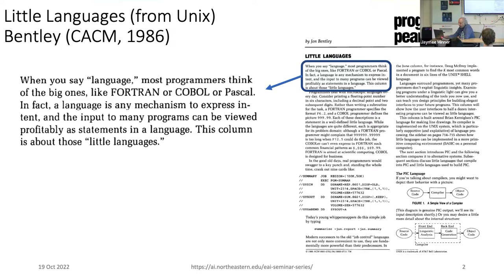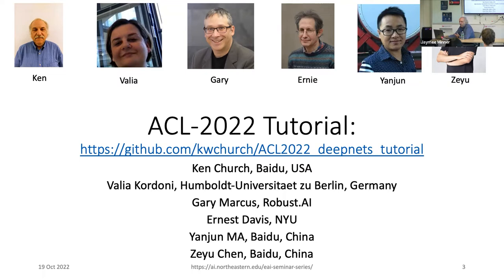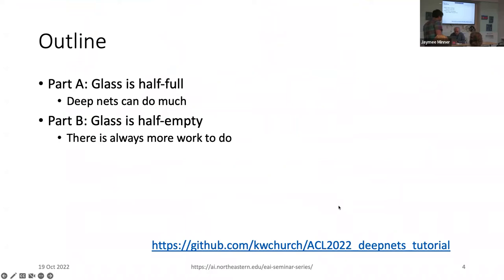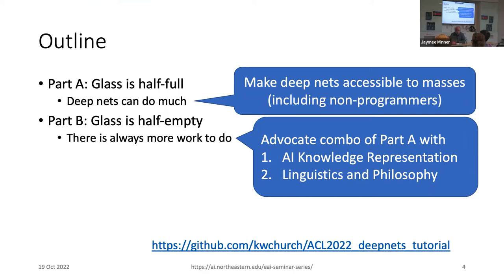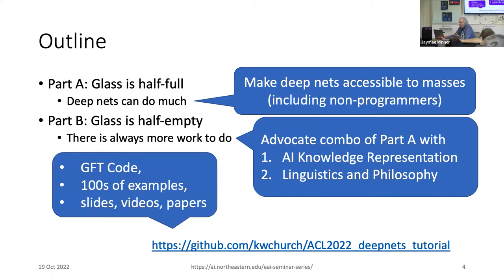Starting with John Bentley talking about little languages in the 80s — things like AWK would be a little language. We're going to propose another one, which I'll call GFT or General Fine Tuning. It's based on this tutorial, which had six people. The tutorial had Part A and Part B. Part A is the glass half full, and Part B is that it's half empty. Part A was to make deep nets accessible to the masses, including non-programmers. Part B advocates a combo of Part A with traditional ideas in AI that go back decades, and things that work in linguistics and philosophy that go back centuries. There's lots of code and videos — a whole lot more depth there.